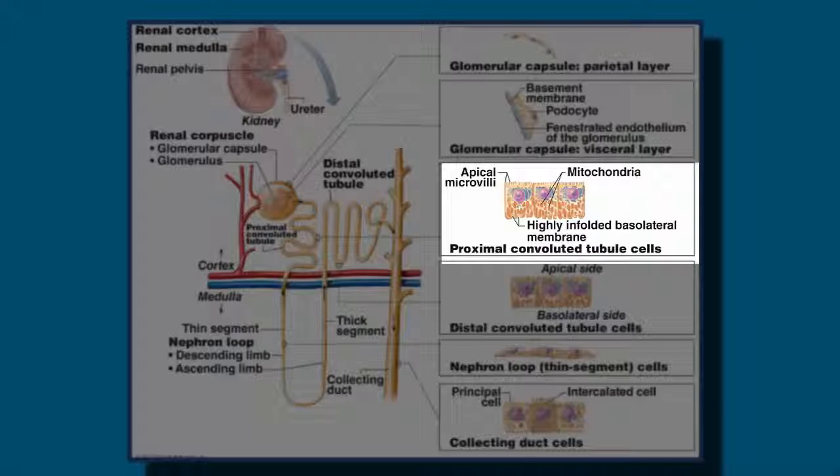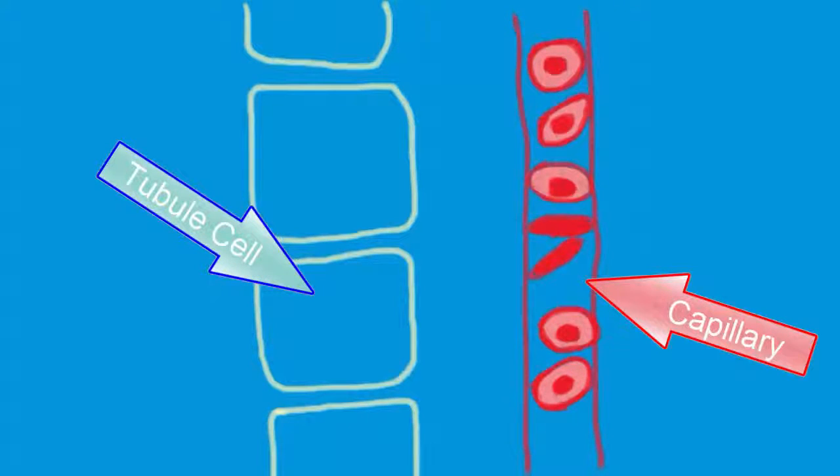We will look at the tubule cells in the other parts of the nephron later on in this video. For now, let's focus on the proximal convoluted tubule. I have used figure 24.14 from your textbook as inspiration for my animation. Make sure you can draw out the process of reabsorption that I will be showing you here. You may want to pause the video here and review from Chapter 3 the membrane transport proteins that you learned about in A&P1, specifically the carrier and channel proteins, and also review active transport, secondary active transport, and facilitated diffusion.